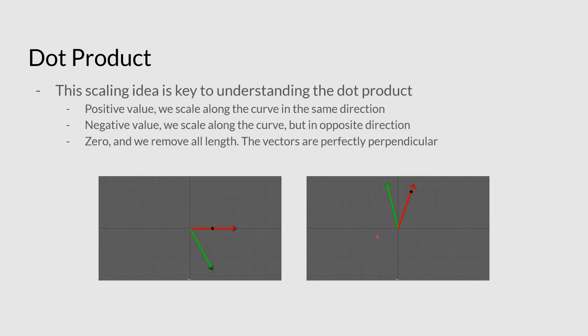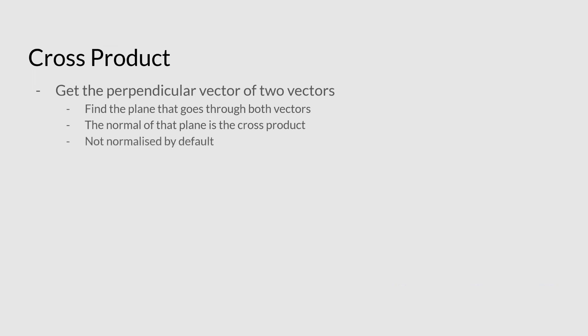So let's move on to another tricky one. The cross product. So the cross product will give you the perpendicular vector of two other vectors. So think of this as you have two vectors, and you have a plane that goes through both of the vectors. The normal of that plane is the cross product. So with the dot product, you will get a singular value, but with the cross product, you will actually get a vector returned. And it's really important to realize that it's not normalized by default as well if you try to use it.